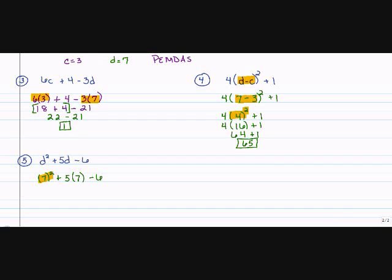And 7 squared, which means 7 times 7. And 7 times 7 is 49 plus 5 times 7 minus 6. Now I'm going to solve all multiplication and division from left to right. There's no division, just multiplication. So I'm going to rewrite my problem. 49 plus 5 times 7 is 35 minus 6.